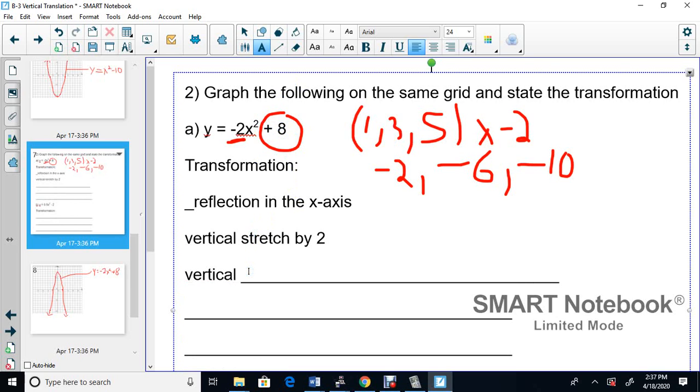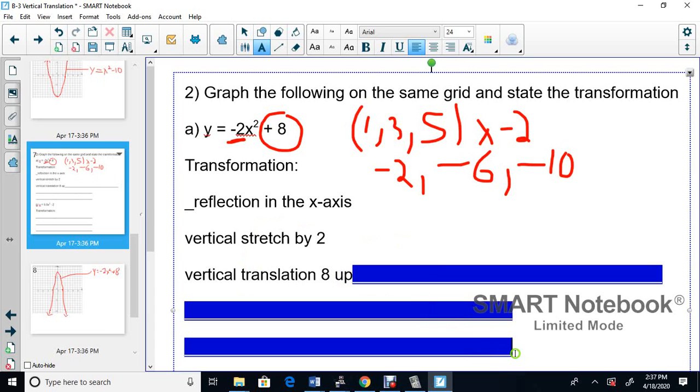And finally, that 8 at the end, the plus 8, the graph went up 8. So we say this is a vertical translation 8 up, or up 8. I don't care which way you type that. So we've got this and now we're going to go to the next one here.